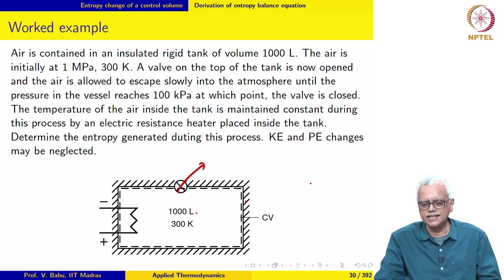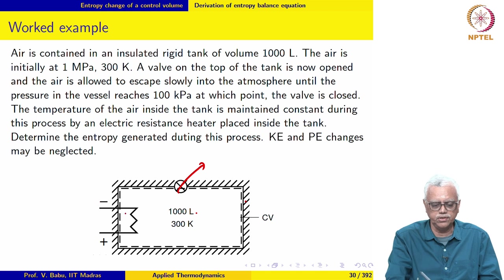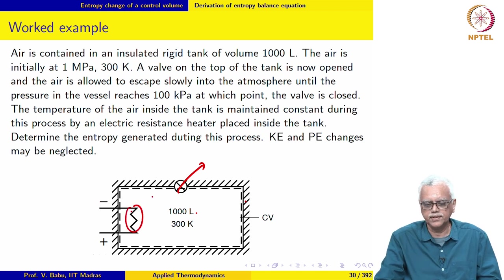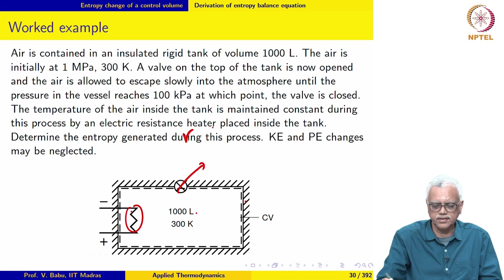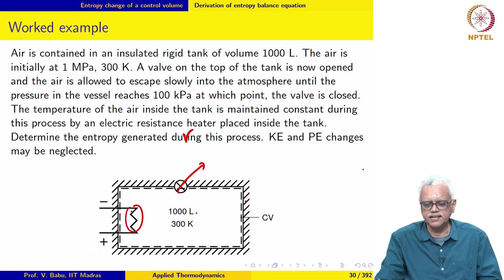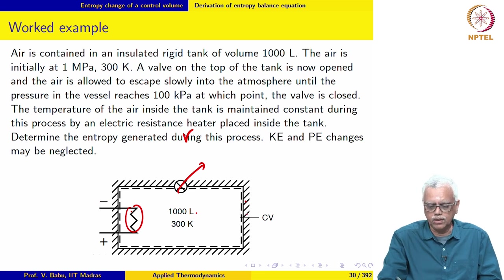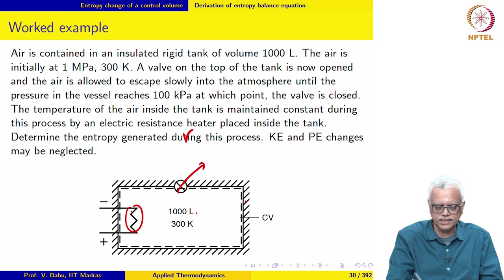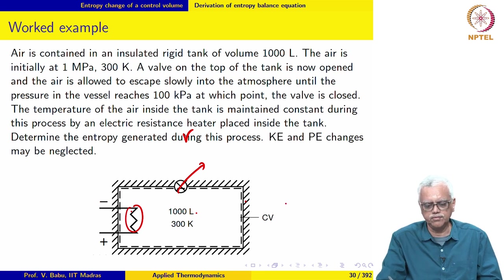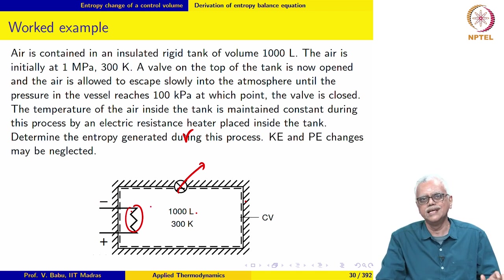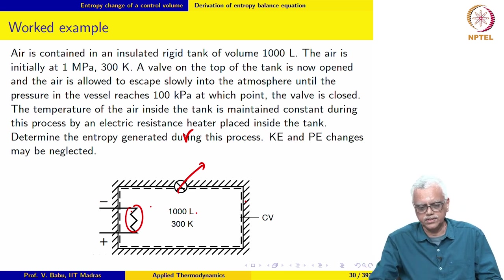The temperature of the air inside the tank is maintained constant during this process by an electrical resistor placed inside the tank. We are asked to determine the entropy generated; KE and PE changes may be neglected. The control volume encloses the vessel plus the resistor, and electrical work crosses the boundary of the control volume.